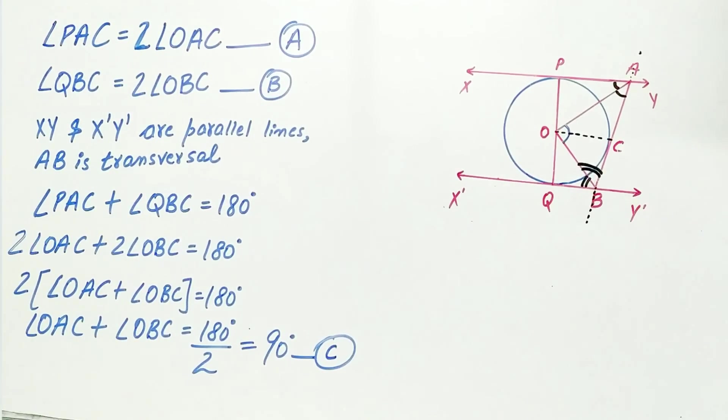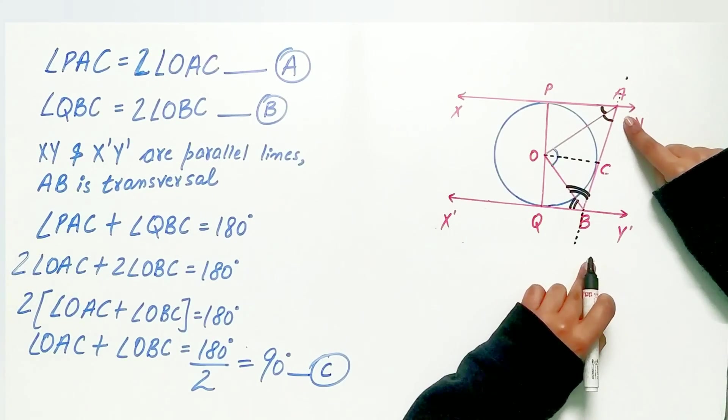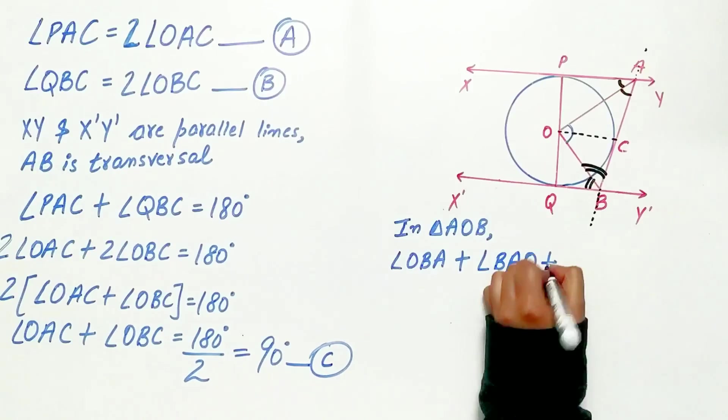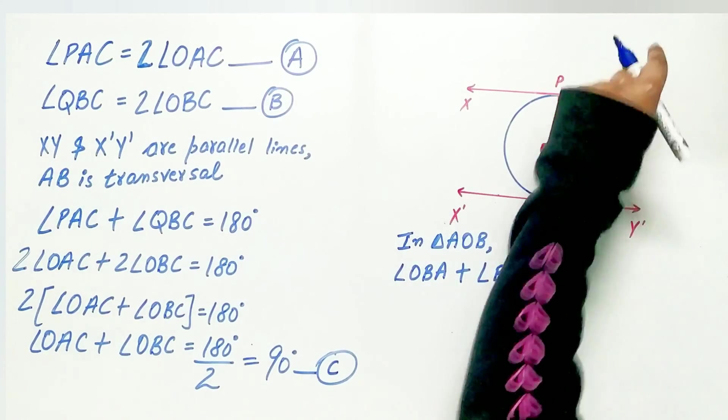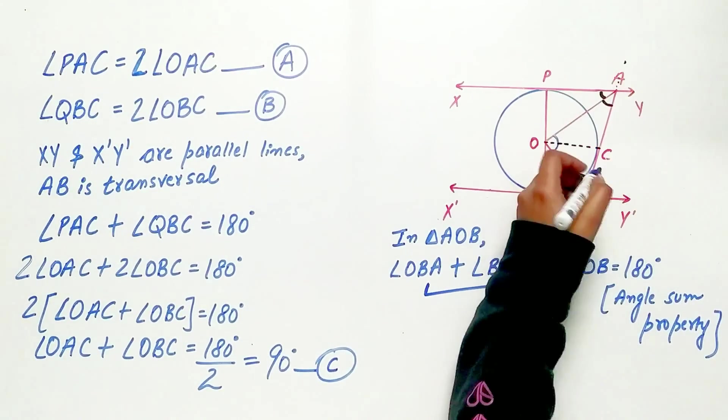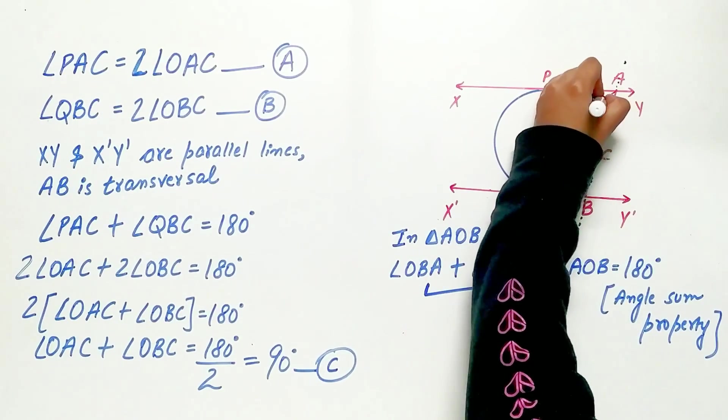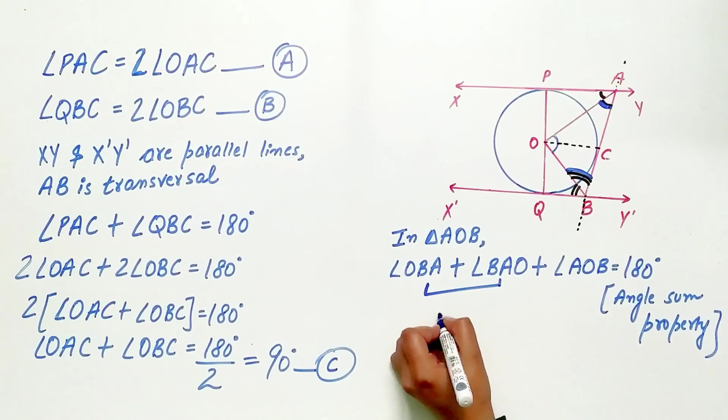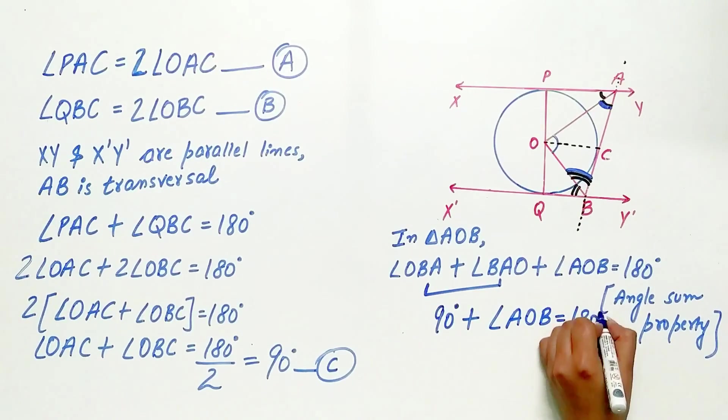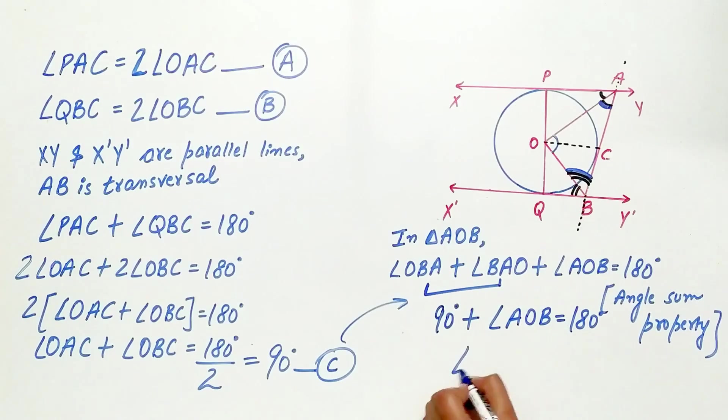The last step to prove that angle AOB is equal to 90 degrees. Look carefully. AOB is a triangle. Angle OBA plus angle BAO plus angle BOA or angle AOB is equal to 90 degrees plus angle AOB is equal to 180 degrees. And now angle AOB is equal to 180 degrees minus 90 degrees which is equal to 90 degrees.